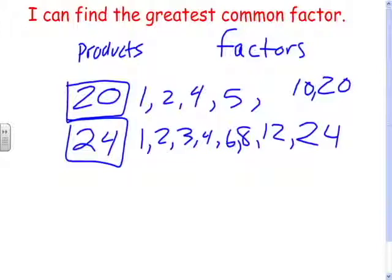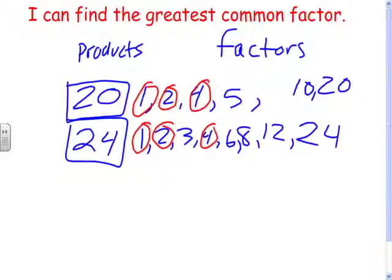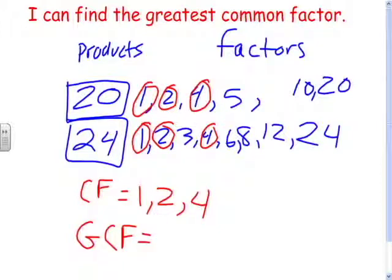Now what are the common factors? Well, that's the same. That's the same. That's the same. And that's it. So again, the common factors are 1, 2, and 4. And the greatest common factor is 4.